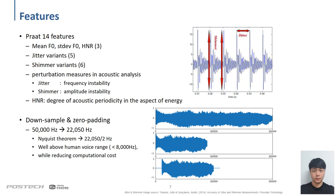The 14 Praat features include mean and standard deviation of fundamental frequency of a sound, harmonic-to-noise ratio, and jitter and shimmer variance. The last two sets of features are a measure of perturbation in acoustic analysis, where jitter demonstrates the frequency instability, whereas shimmer represents the amplitude instability of a signal. Harmonic-to-noise ratio denotes the degree of acoustic periodicity in the aspect of energy. For the 1D CNN application, downsampling and zero padding are utilized. A raw signal has been downsampled to 22,050 Hz, which is one of the common frequencies. By the Nyquist theorem, the converted signal can accurately represent up to half of the sampling rate, which is around 10,000 Hz. This value is well above the human voice range of 8,000 Hz.